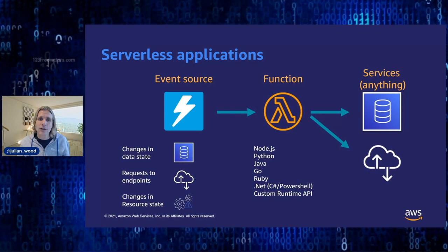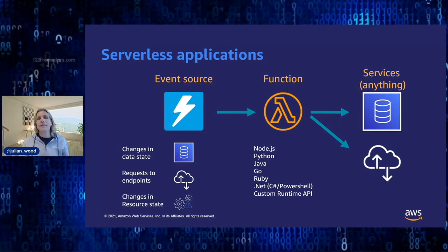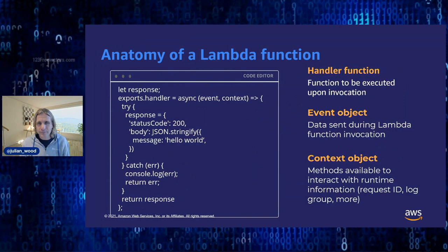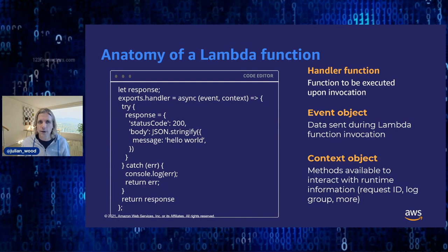Lambda is a compute service running on top of underlying compute resources. Yes, there are actually servers running in serverless, but you don't have to think about them, manage them, scale them yourselves, pay for idle, or deal with high availability. A Lambda function itself is just some code with a handler function — the main entry point and business logic. There's an event object, which is the data you want to send to the function for processing, and a context object with methods and properties giving info about the function and Lambda environment.